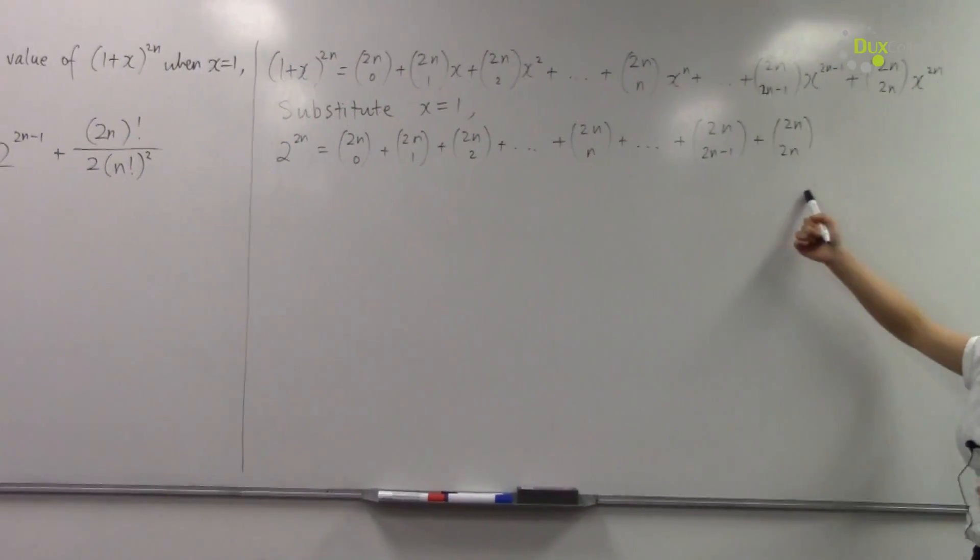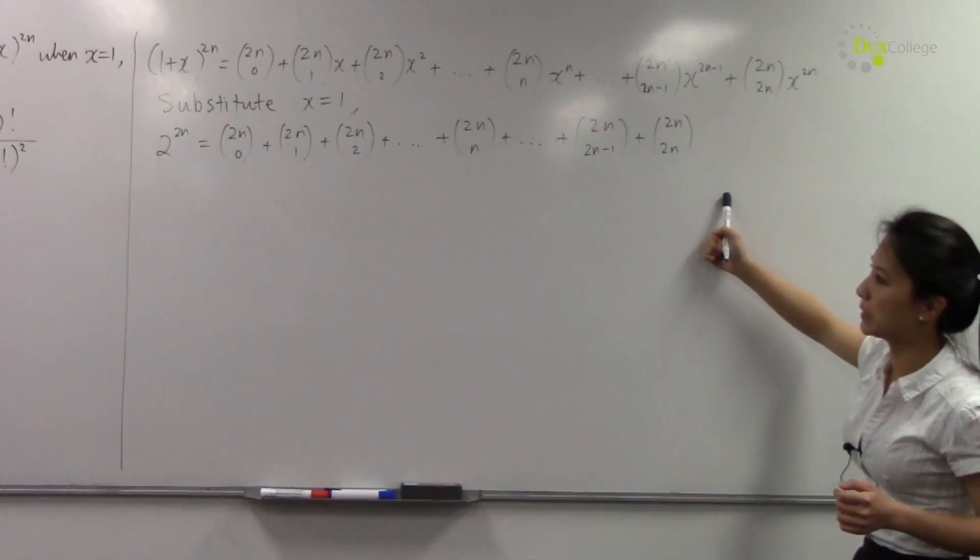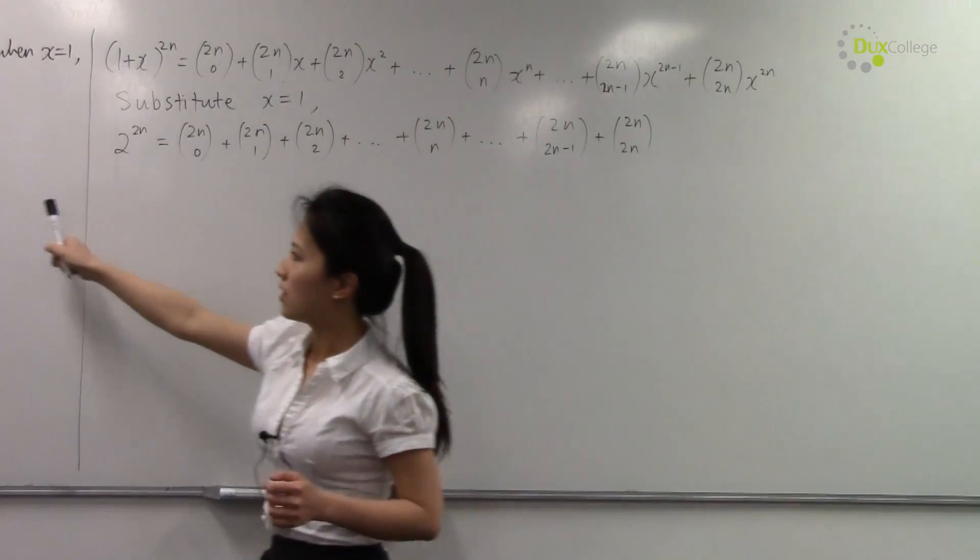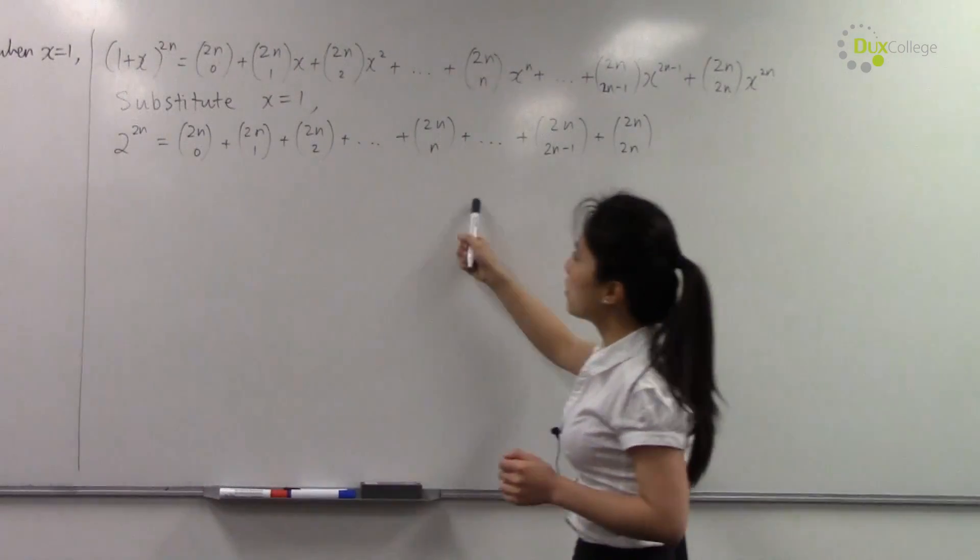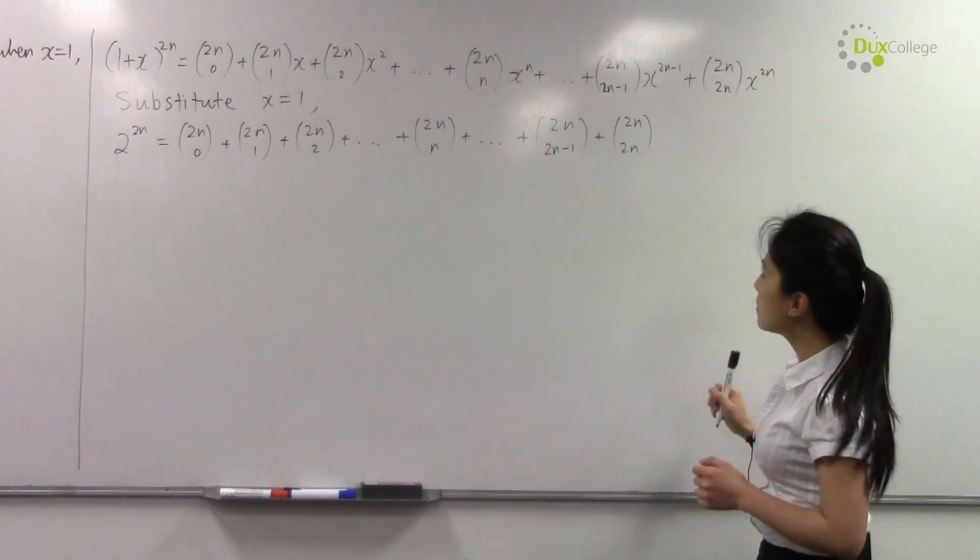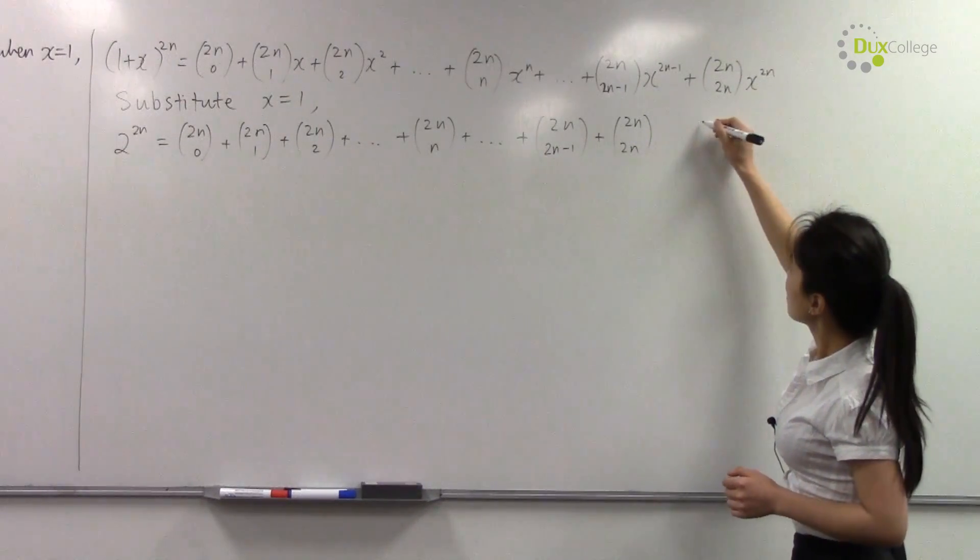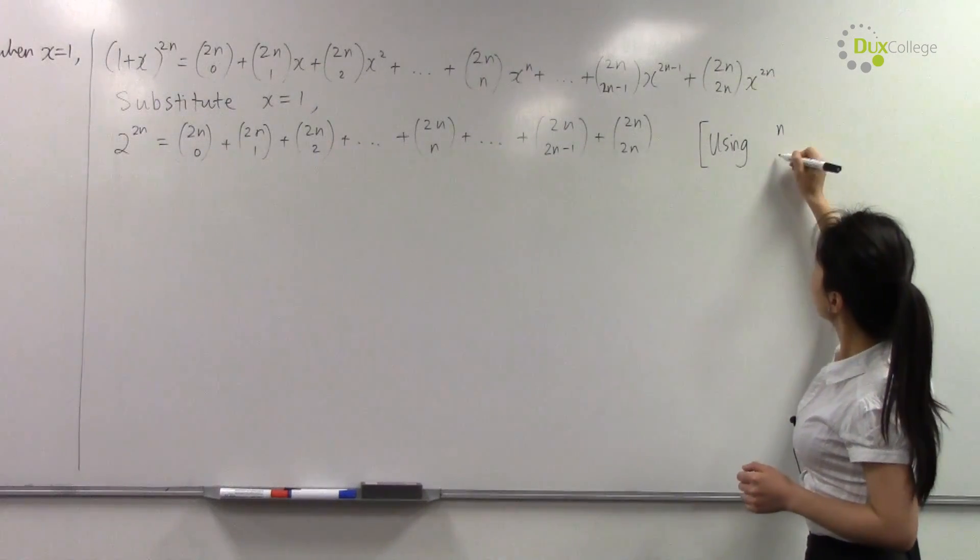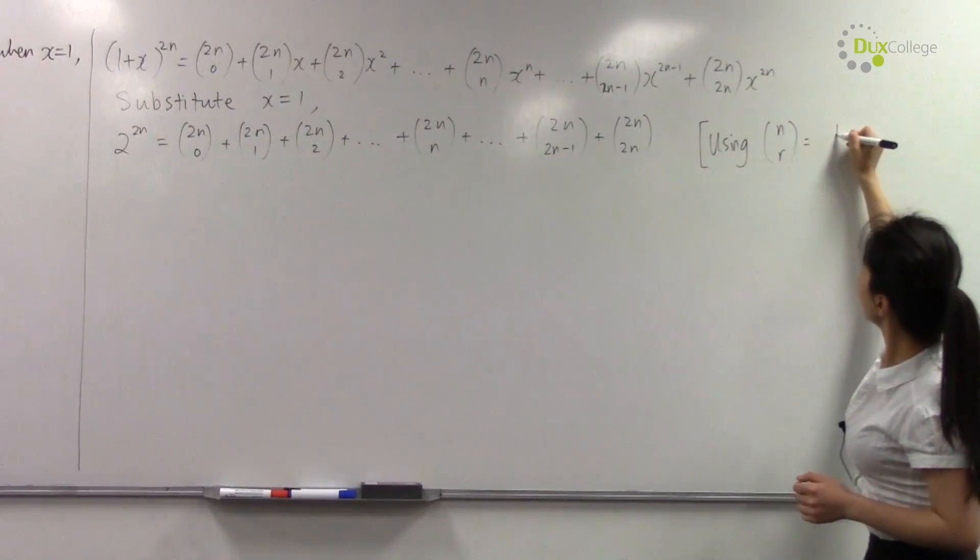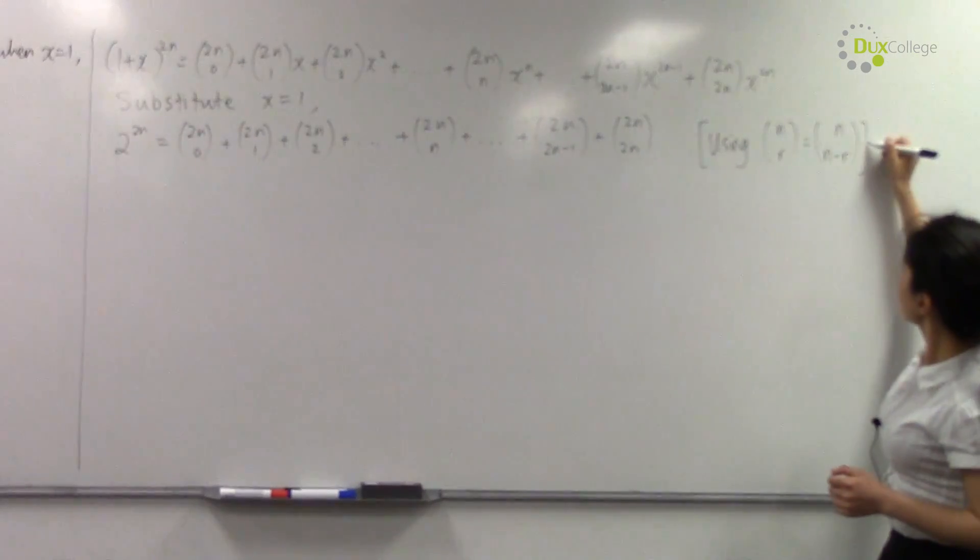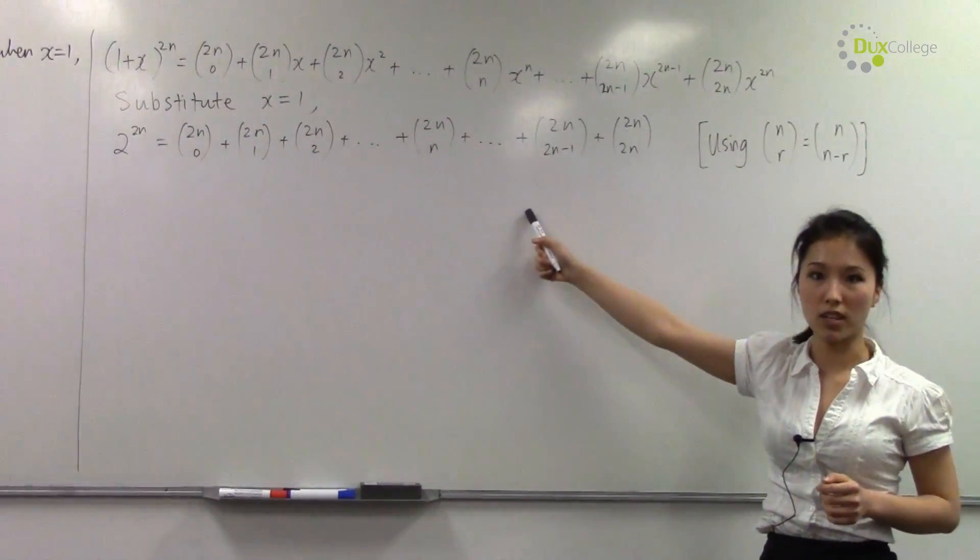So we get this after substituting x equals 1. Okay, now we're still far from the answer. What we should do here is simplify this expression. Now remember a fact that using n choose r equals n choose (n-r).